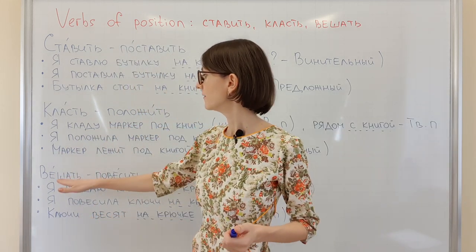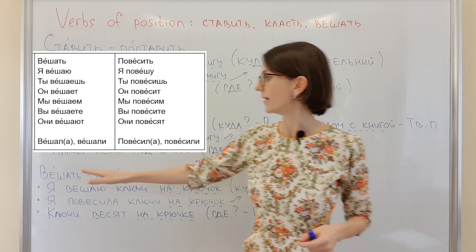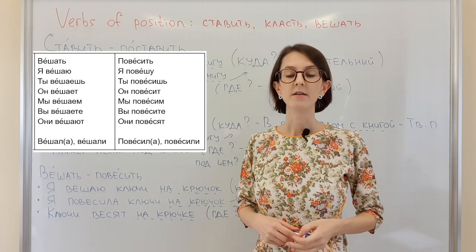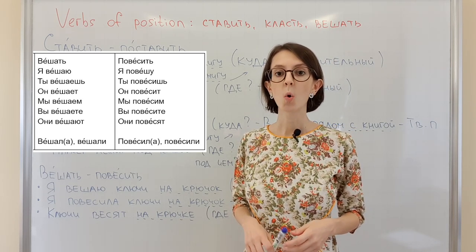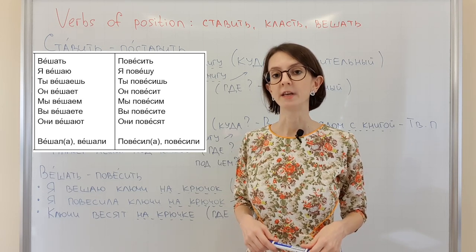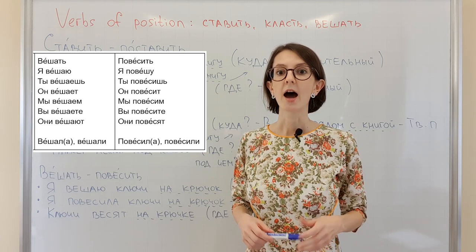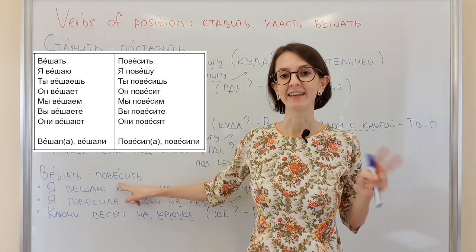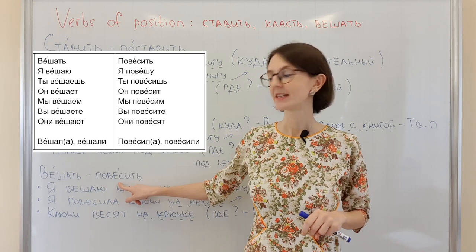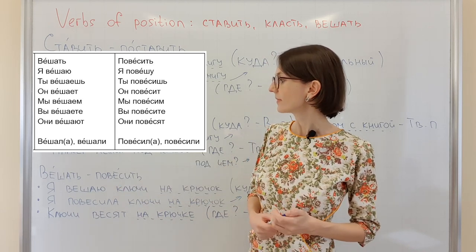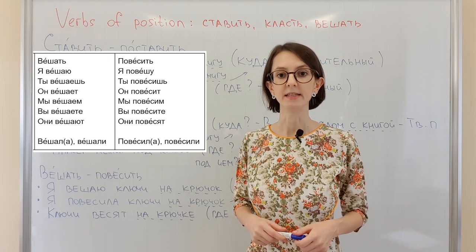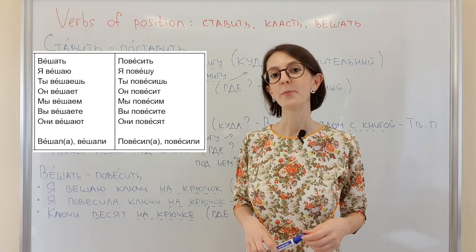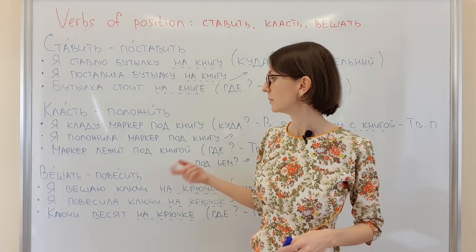The next verb is вешать, which means to hang. This is an NSV verb. Я вешаю, ты вешаешь, он вешает, мы вешаем, вы вешаете, они вешают. The SV form is повесить — used only for past and future tenses. Я повешу, ты повесишь, он повесит, мы повесим, вы повесите, они повесят.